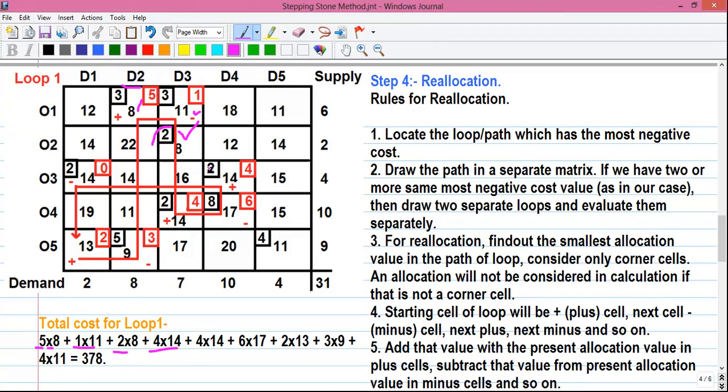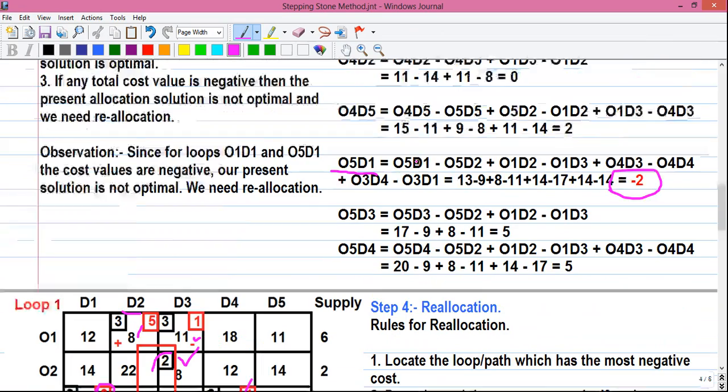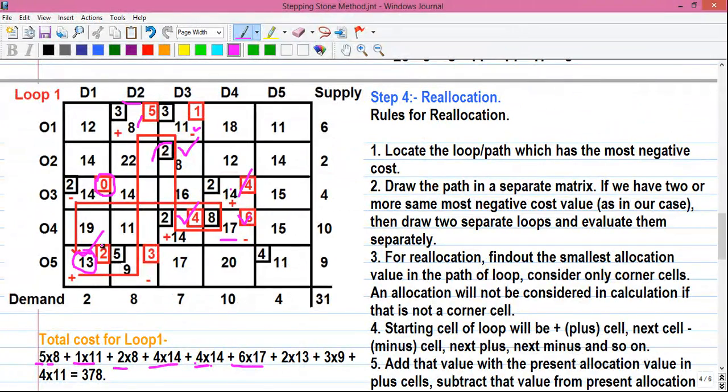Plus 4 into 14 for O2D3 plus 4 into 14 for O3D4 plus 4 into 14 for O4D3 plus 6 into 17 for O4D4 plus 2 into 13 for O3D4. For cell O5D4, notice which earlier had a negative value, here a new allocation is done with the value 2 plus 3 into 9 plus 4 into 11 for O5D5. So adding all the cost values you will get 378.